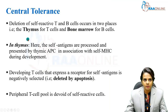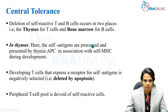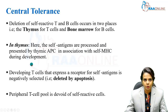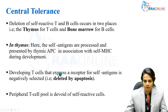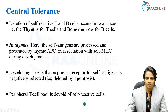Moving on to central tolerance in detail: deletion of self-reactive T cells and B cells occurs in two places — in the thymus for T cells and in the bone marrow for B cells. In the thymus, self-antigens are processed and presented by thymic antigen-presenting cells in association with self-MHC (major histocompatibility complex) during development. Developing T cells that express a receptor for self-antigens are negatively selected — that is, deleted by apoptosis — so the peripheral T cell pool is devoid of self-reactive T cells.